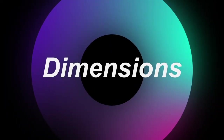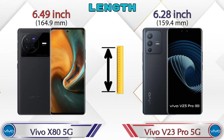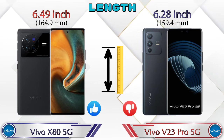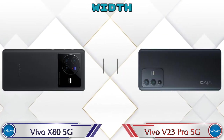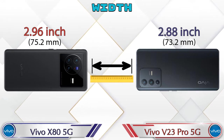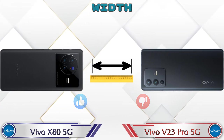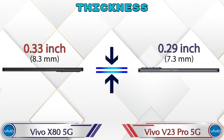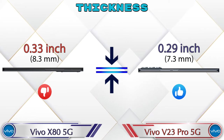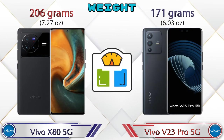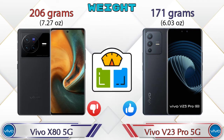Looking at dimensions, the Vivo X8 5G has a length of 6.49 inches while the V23 Pro 5G is 6.28 inches, which is smaller. The width of the Vivo X8 5G is 2.96 inches compared to 2.88 inches on the V23 Pro 5G. For thickness, the Vivo X8 5G measures 0.33 inches versus 0.29 inches on the V23 Pro 5G. The Vivo X8 5G weighs 206 grams compared to a lighter 171 grams for the V23 Pro 5G.